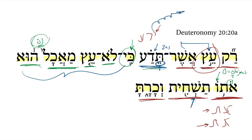The verb 'you shall destroy' is a Hifil imperfect 2ms of the verbal root shachat. And then finally, we get a Qal perfect 2ms — notice the 'ta' ending — of the verbal root karat, meaning 'and you shall cut it down.'